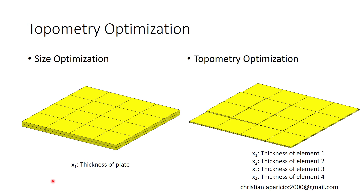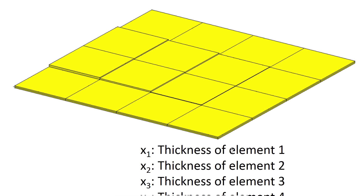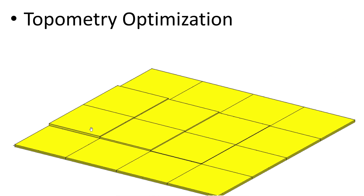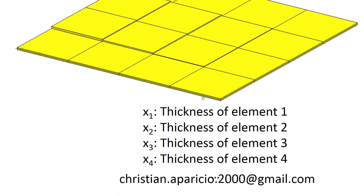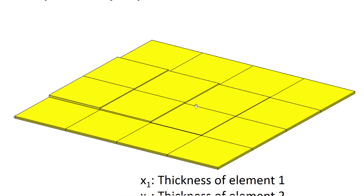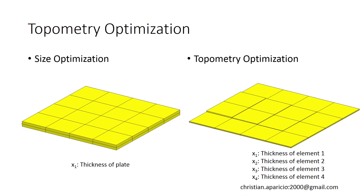With topometry optimization, when you say you want to modify the thickness, what you're saying is that each element has its own design variable for thickness. Here's the result of a topometry optimization where we varied the thickness — it gives each element its own thickness design variable, and in the end you'll have each element with its own individual new optimized size parameter. The biggest difference between size and topometry is that with size, we're optimizing one property for the entire plate, while with topometry, it's optimization at the individual element level.